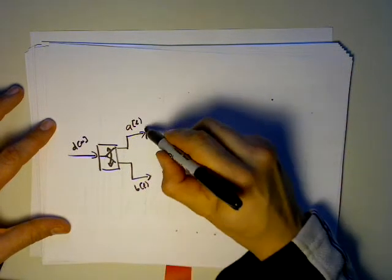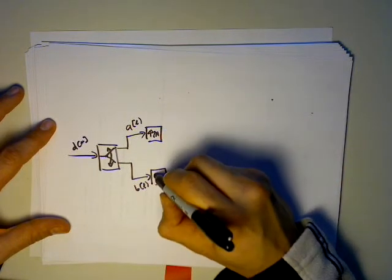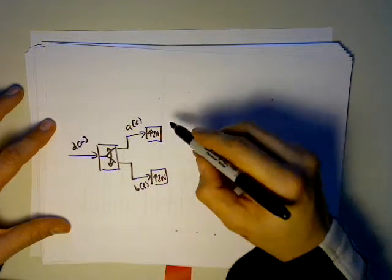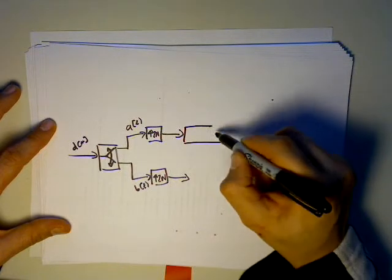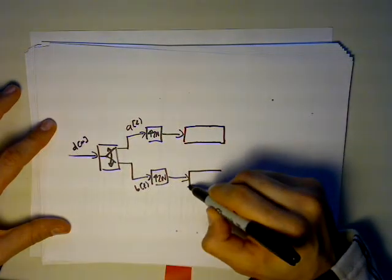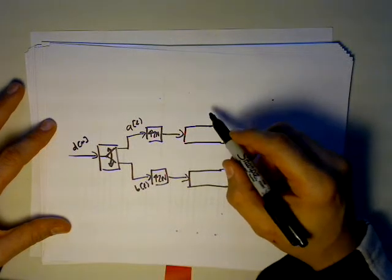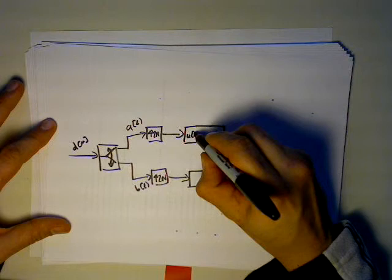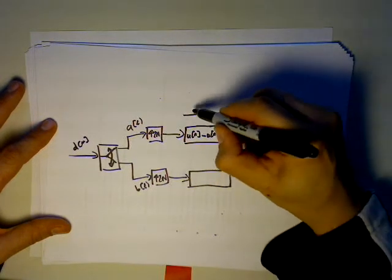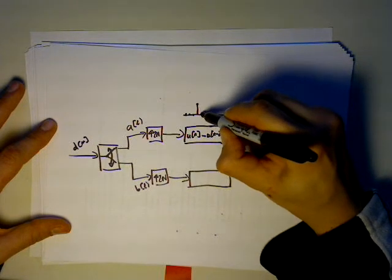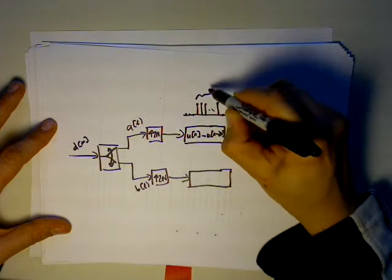We then upsample by 2N. Then what we do is we do a little trick. We feed this through a filter that has the following impulse response. It essentially is a rectangular pulse. We have a unit step function u[n] minus u[n-2N]. So it essentially will look like 0, 0, 0, 1, 1, 1, and then back to 0. There are going to be 2N of these.